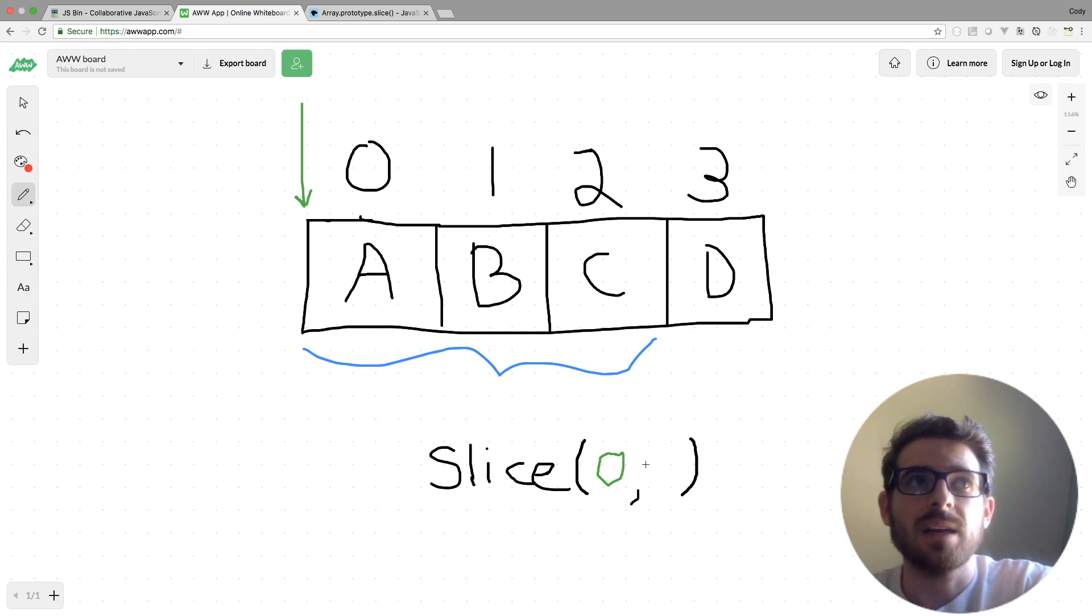Now the benefit of using a negative one is that regardless of the length of this array, it's always going to work. If we just used a three here, it's only going to work when the array is length four. If this array gets larger, it's only going to grab us the first three elements. But what we actually want in this example is we want to grab every element except for the last one. So here is a good example of how to do that.